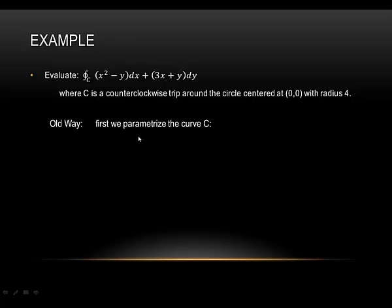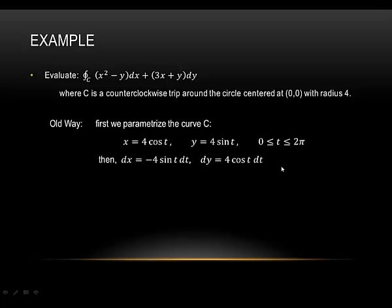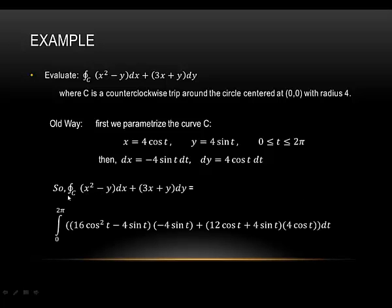If we were going to do this the old way, first we'd have to come up with a parametrization for this circle. We could use x = 4cos(t), y = 4sin(t), and t goes from 0 to 2π for one trip around. We also need to compute dx and dy. dx is the derivative, which is −4sin(t) dt, and dy is 4cos(t) dt. Then we convert the entire expression to parametric equations, replacing x with 4cos(t), y with 4sin(t), and substituting dx and dy accordingly. My limits for the parameter t are 0 to 2π.